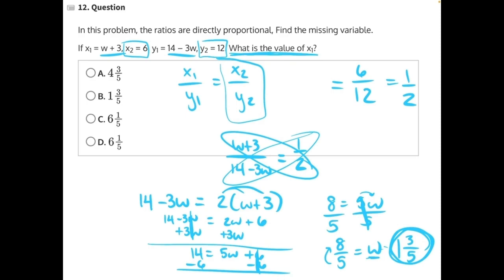What we need to do with this is take this w and plug it in to the value of x1, which is w plus 3. When we do that, when we add 1 and 3 fifths to 3, we will get 4 and 3 fifths, making A our correct answer.